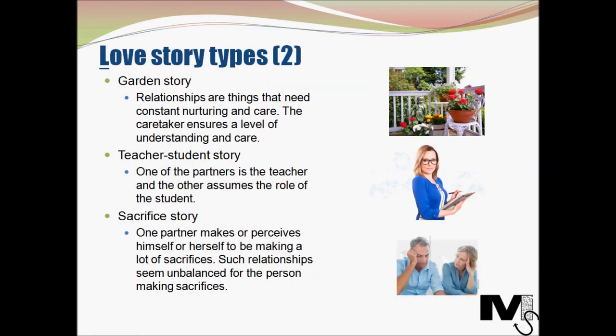The next story type is the garden story type. People who follow the garden story look at relationships as things that need constant nurturing and care, like plants in a garden. They work actively towards ensuring their partner's fulfillment and that of the relationship — they believe in constantly working on it. After arguments and indifferences, such people tend to pamper their partners and try to set things right. The positive aspect is the level of understanding and care involved, but if only one person believes in this story, it could get rather tiring for that person being the constant caretaker.